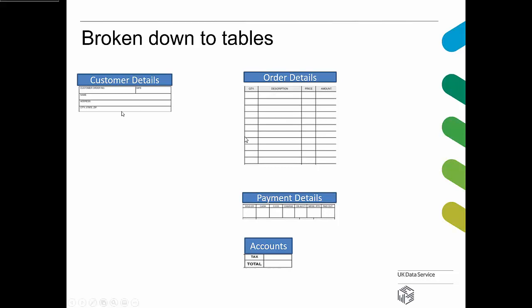The customer details table could be used for sending out the latest catalogue — just names and addresses. The order details are useful for the warehouse staff who need to know how much stock has been sold and needs reordering. Payment details are what the accounts department needs to track cash versus cash-on-delivery. Accounts are also interested in the total of sales. Individually these tables each have their own uses, but on their own they're of limited use.